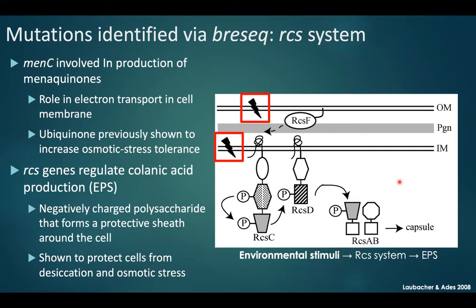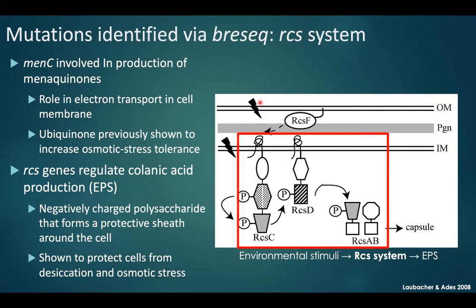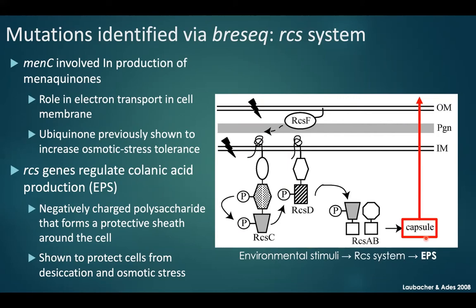The other shared mutation was in the RCS system. The RCS genes regulate colanic acid production, also known as EPS — a negatively charged polysaccharide that forms a protective sheath around the cell, previously shown to protect cells from desiccation as well as osmotic stress. In this figure, an environmental stimulus activates the RCS system via a phosphorylation cascade, resulting in production of EPS as a capsule that is exuded outside the cell, protecting it from osmotic stress.